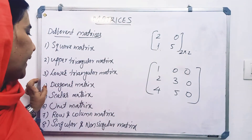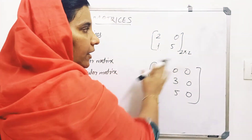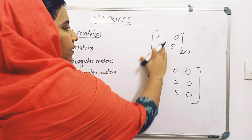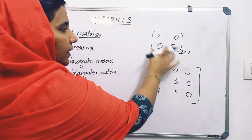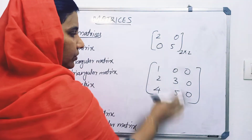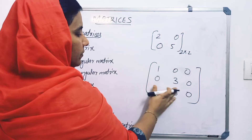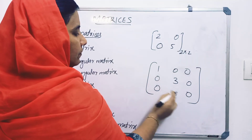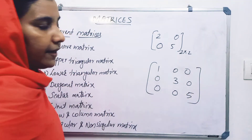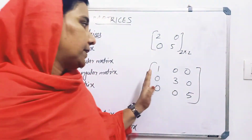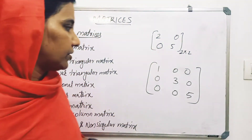Next is the diagonal matrix. In a diagonal matrix, only the principal diagonal elements are non-zero; all other elements are zero.